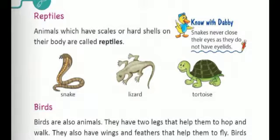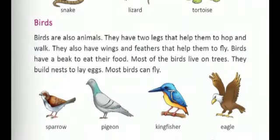Know with Debbie about snakes: snakes never close their eyes as they do not have eyelids. Now let us move to the next topic, that is birds. Birds are also animals. They have two legs that help them to hop and walk. They also have wings and feathers that help them to fly. Birds have a beak to eat their food. Children, birds do not have teeth; in place of teeth, they have a beak to eat their food.